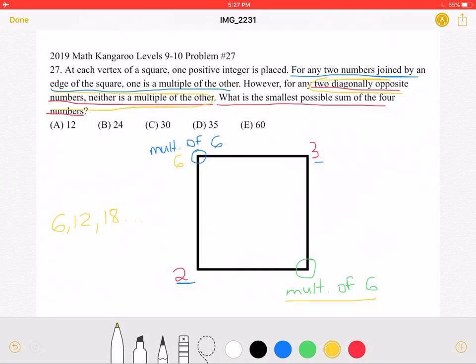So we can't do that. Therefore, we need to use the next smallest multiple of 6, which would be 12. We could put 12 here, and then the next smallest multiple of 6, which is 18, here.